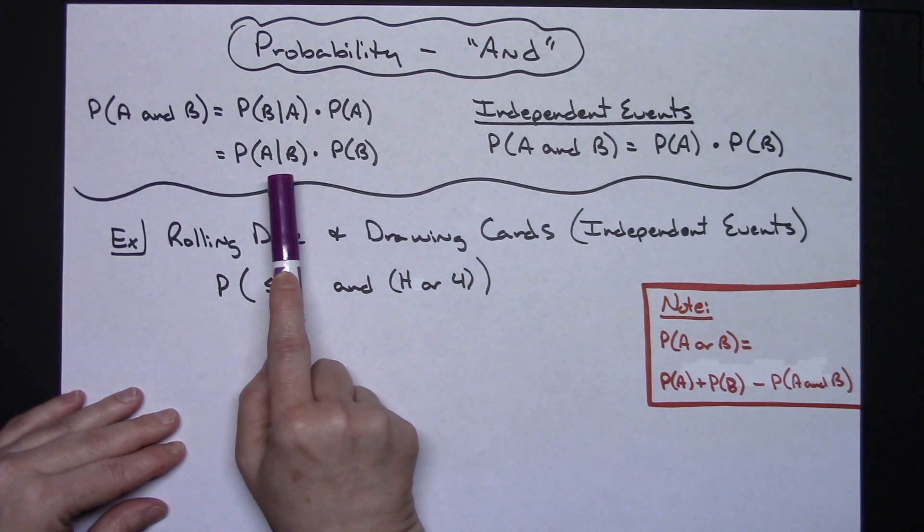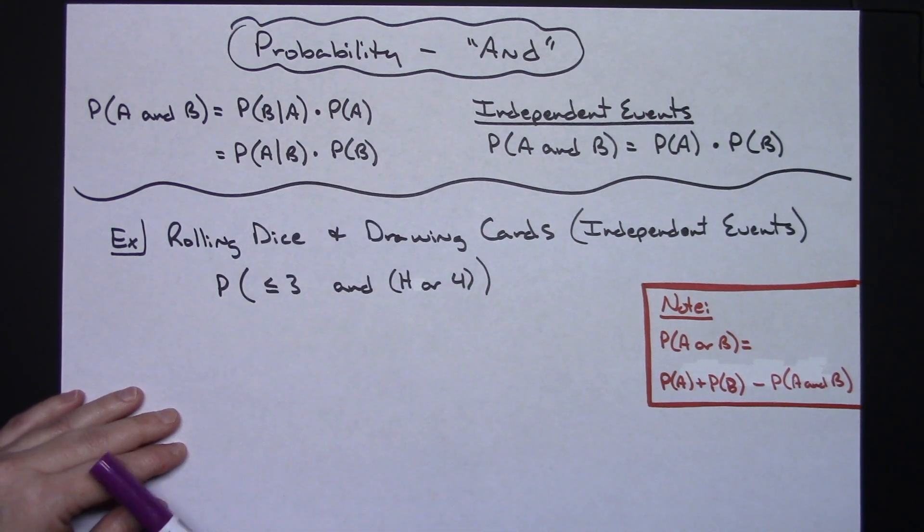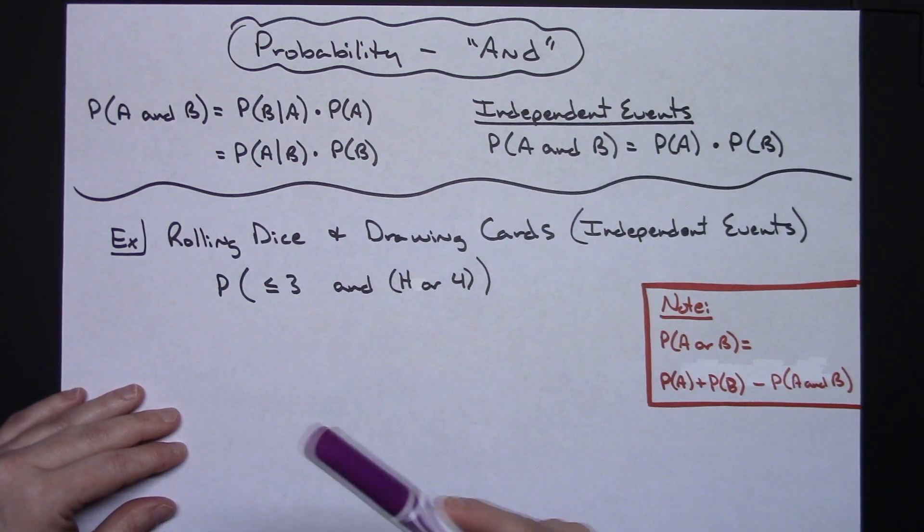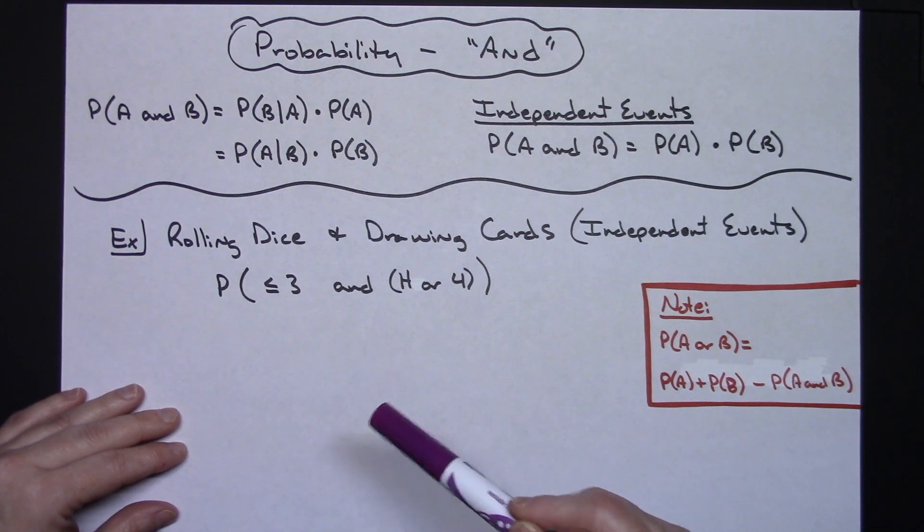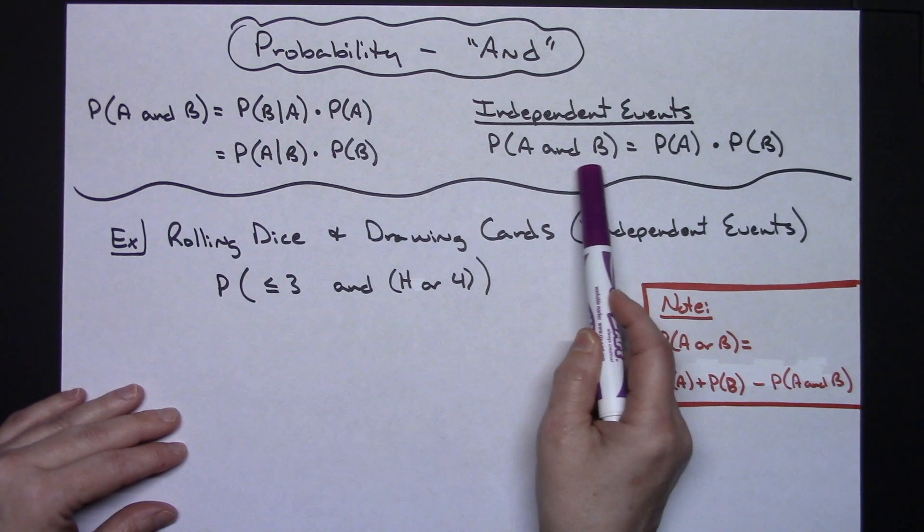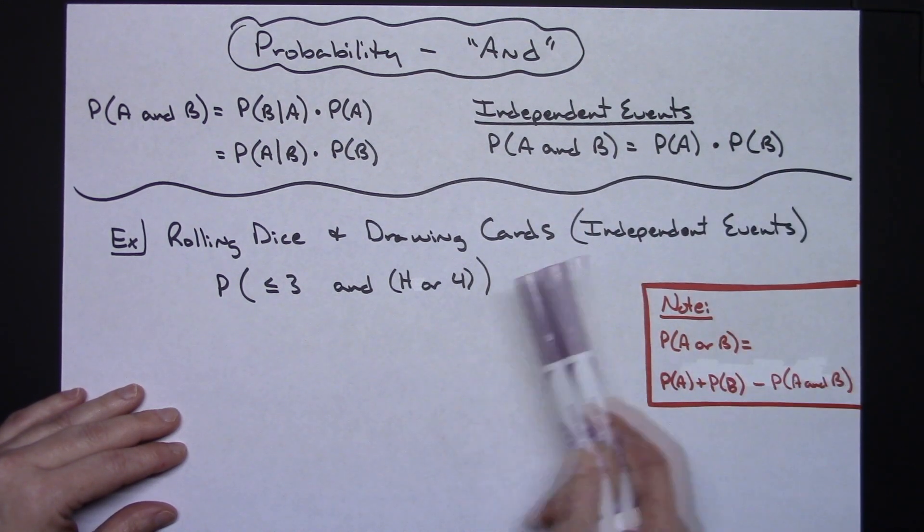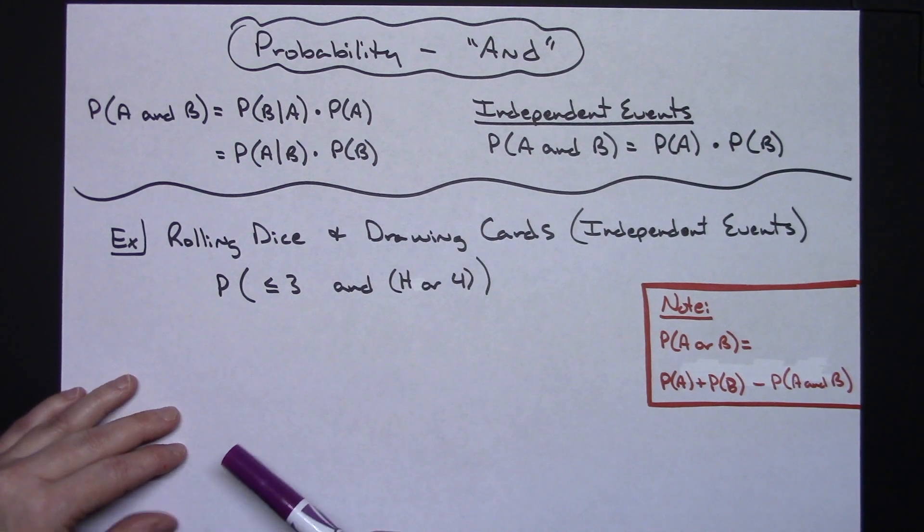Now if the events are independent events - independent events are when one event does not affect the other one - then your probability of A and B would be the probability of A times the probability of B.